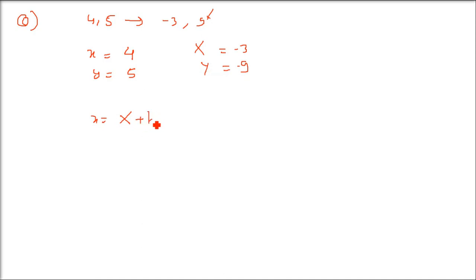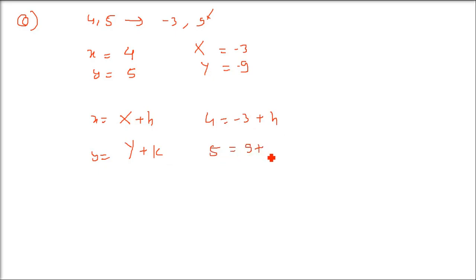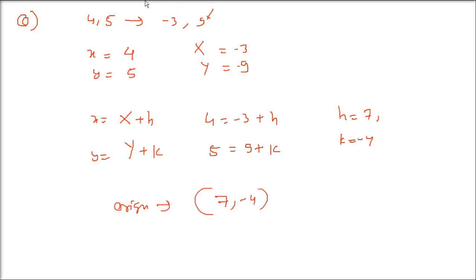We already have the formula: small x equals capital X plus h, and small y equals capital Y plus k. So putting the values: 4 equals minus 3 plus h, and 5 equals 9 plus k. This gives h equals 7 and k equals minus 4. So the origin must be shifted to (7, minus 4). This is how the new coordinate system gives (minus 3, 9). This is about the shifting of origin.